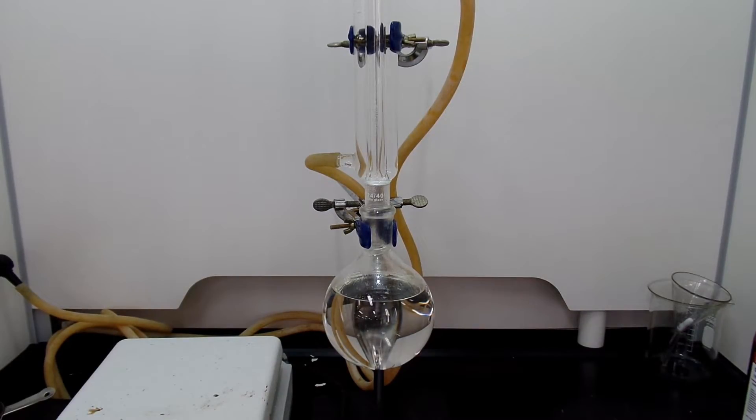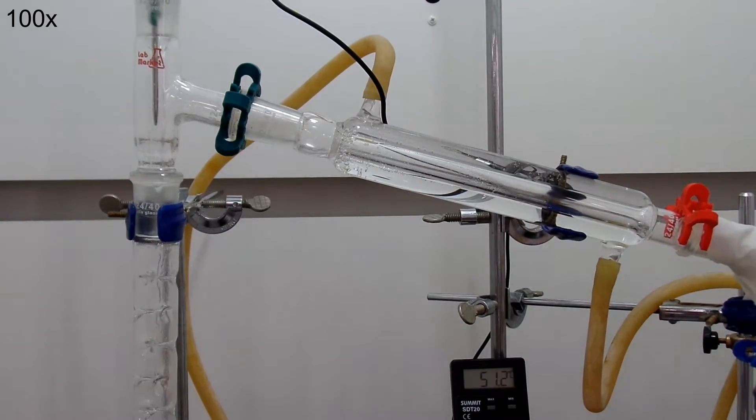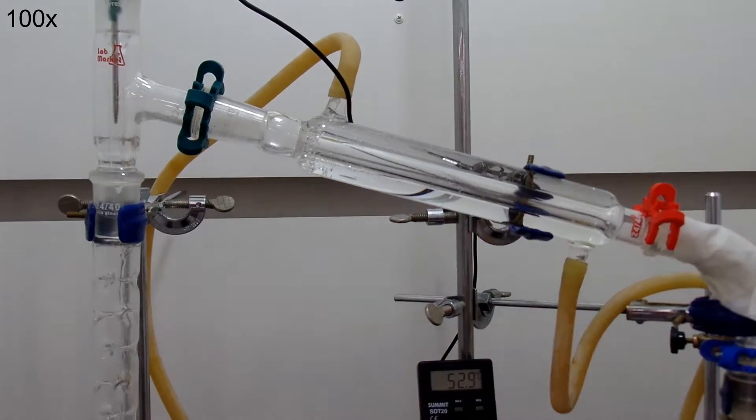Okay, that's two hours. Remove the reflux condenser and set up a fractional distillation. One bromopropane boils at 71 degrees Celsius, so collect everything around that temperature.